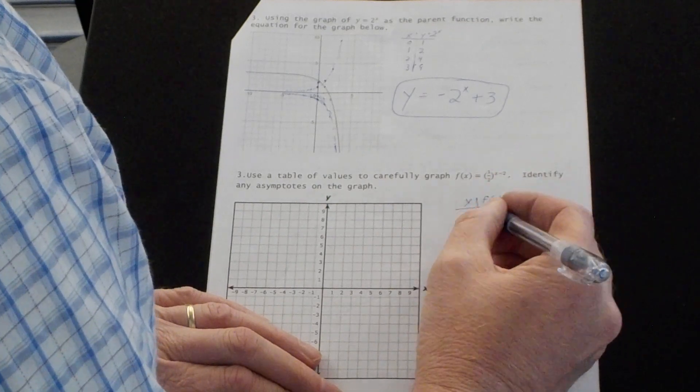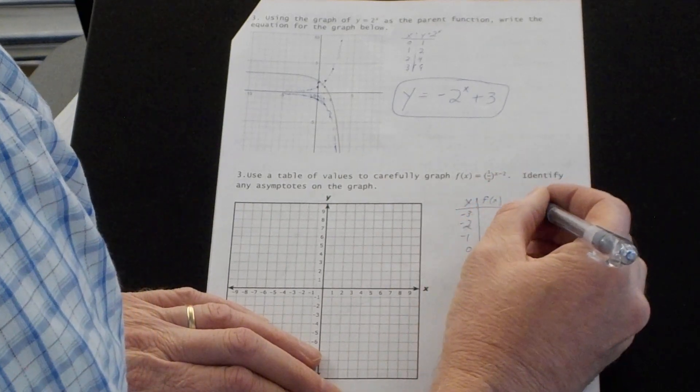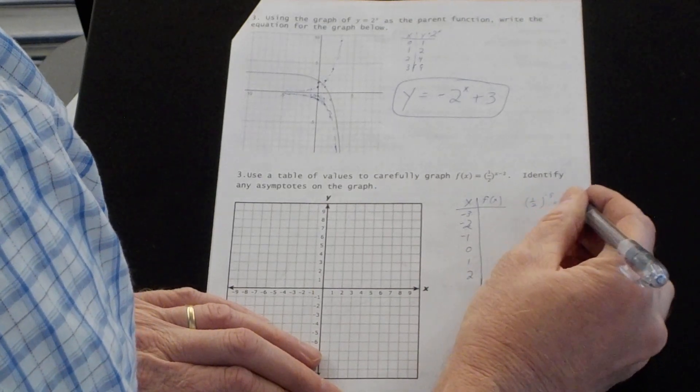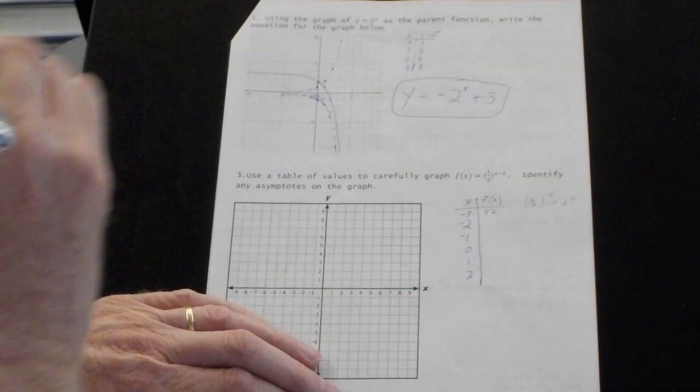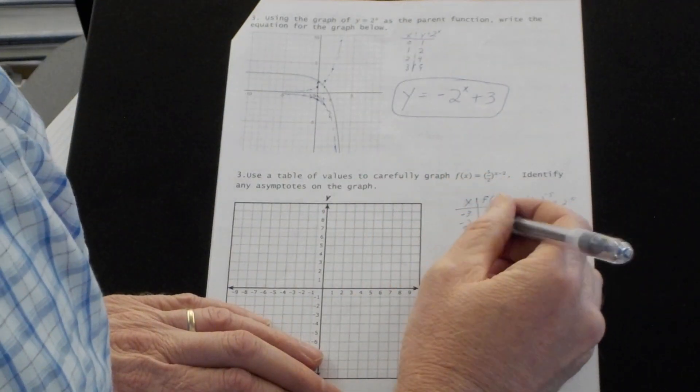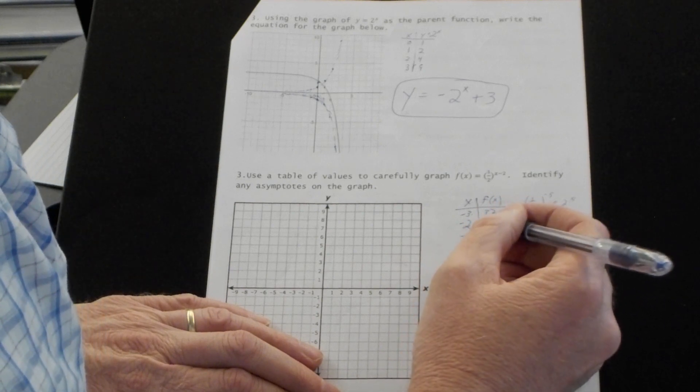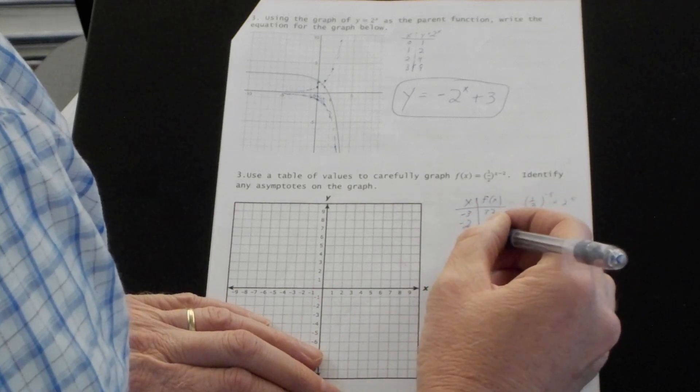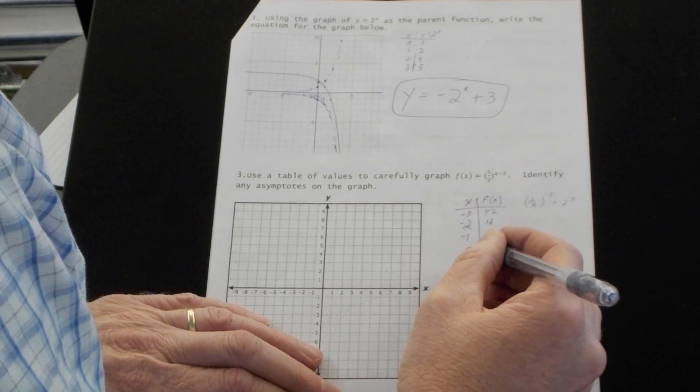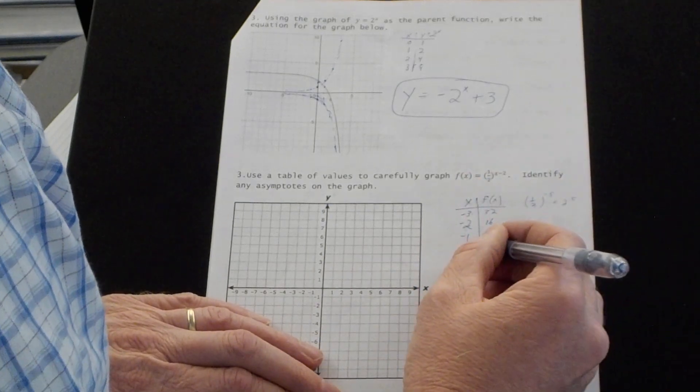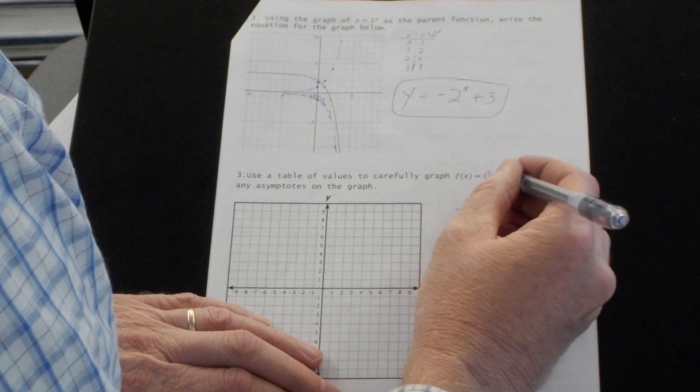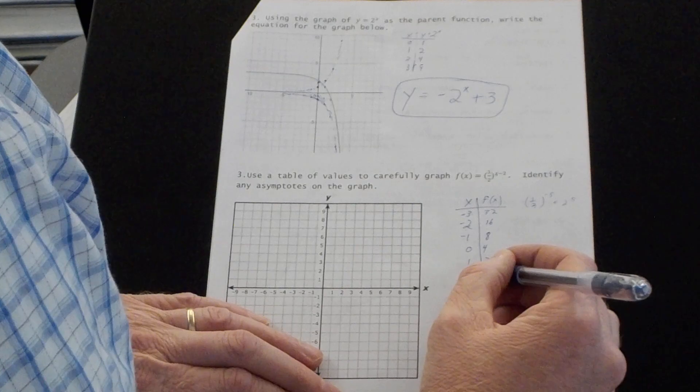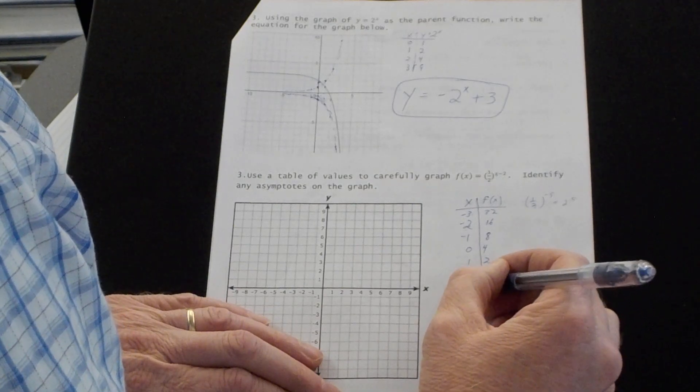Negative three minus two, that's negative five. That's one half to the negative fifth, which is the same as if I take the reciprocal, that is two to the fifth. So this is way up here at 32. That's not going to show up. One half to the negative fourth is 16. I'm just going to take a half each time. One half to the negative three is eight. One half to the negative second is four. One half to the negative first is two. One half to the zero is one.